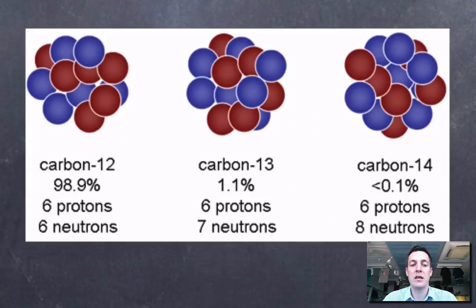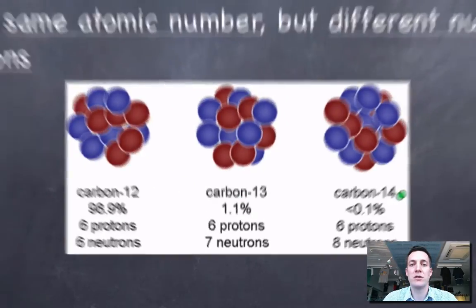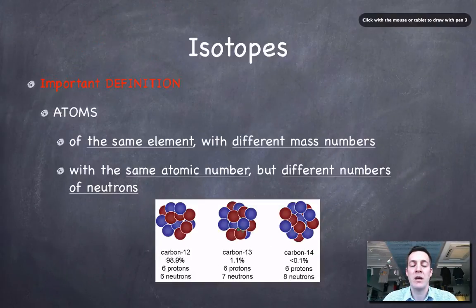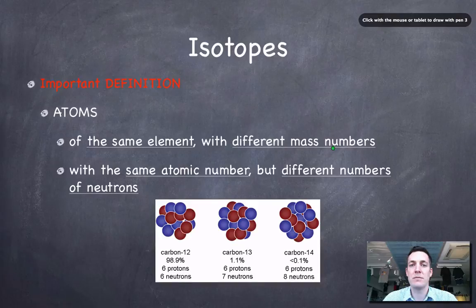So all these atoms are carbon — that is to say they're all the same element. But they've got different mass numbers: 12, 13, and 14. So I define isotopes as being atoms of the same element with different mass numbers.